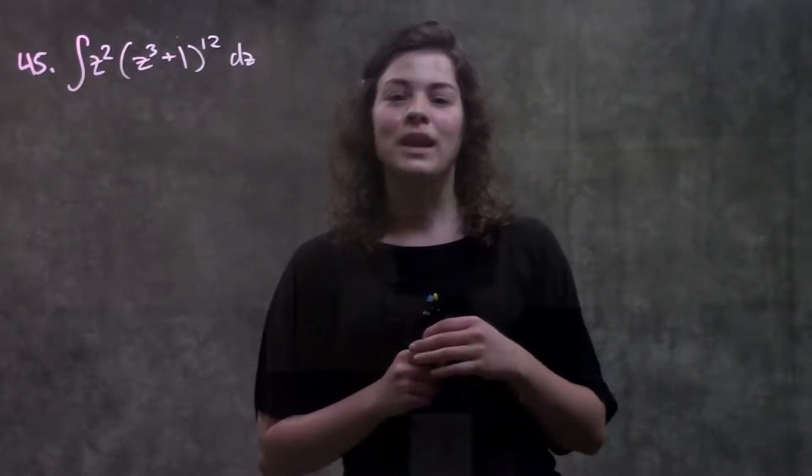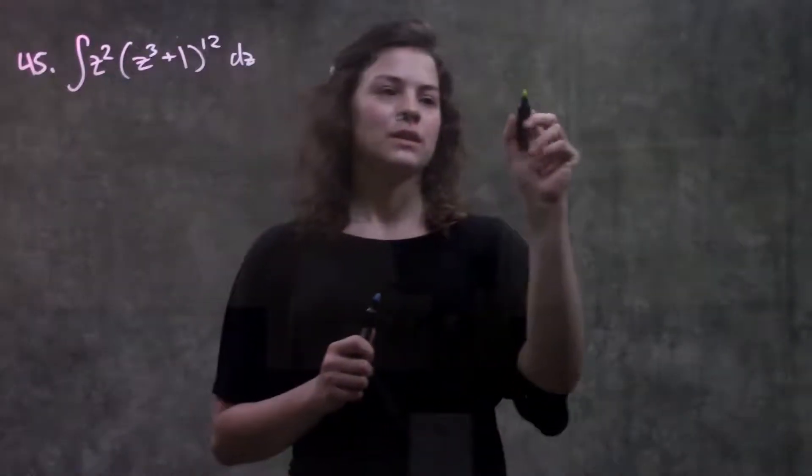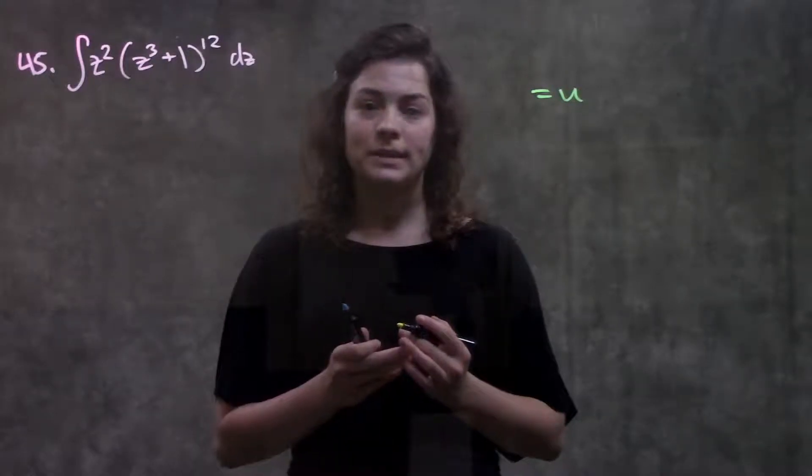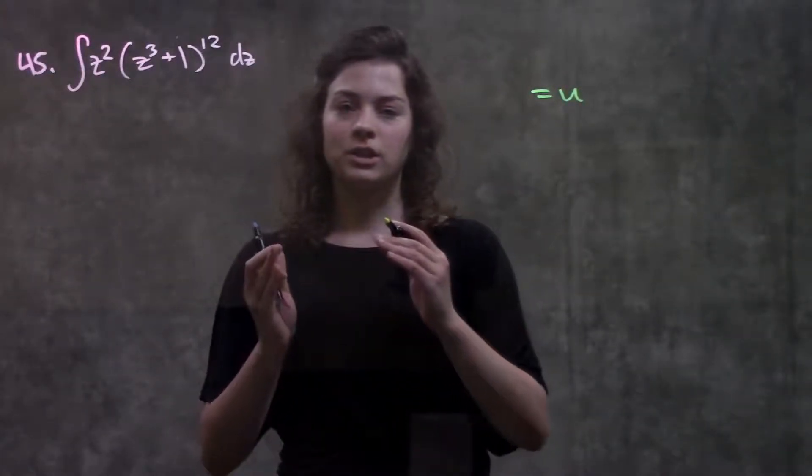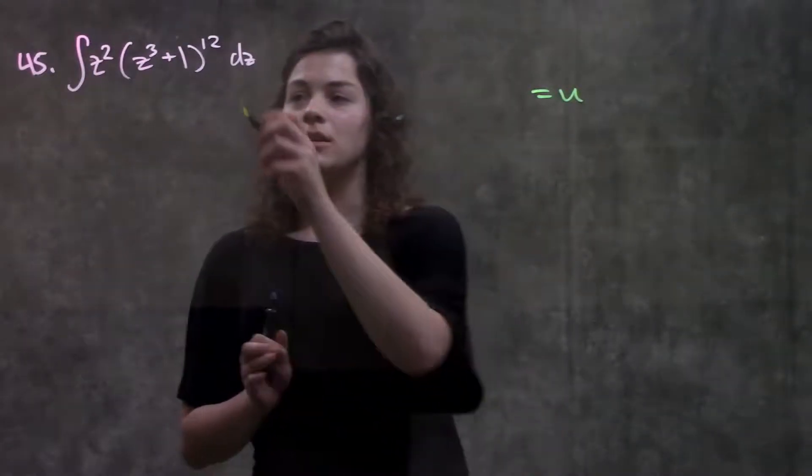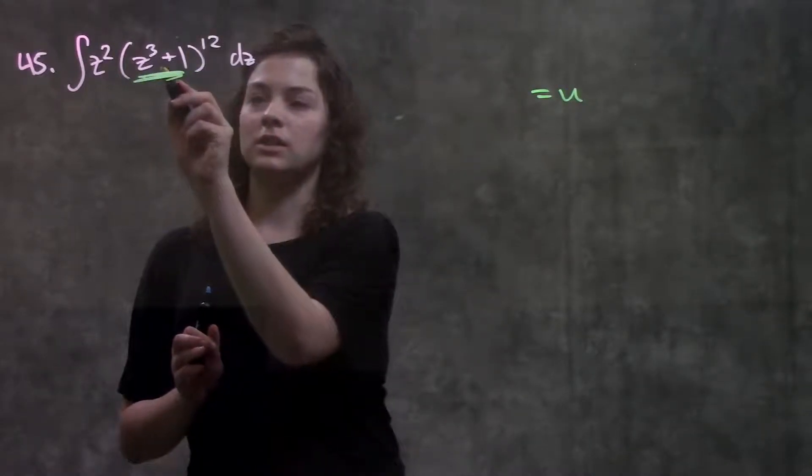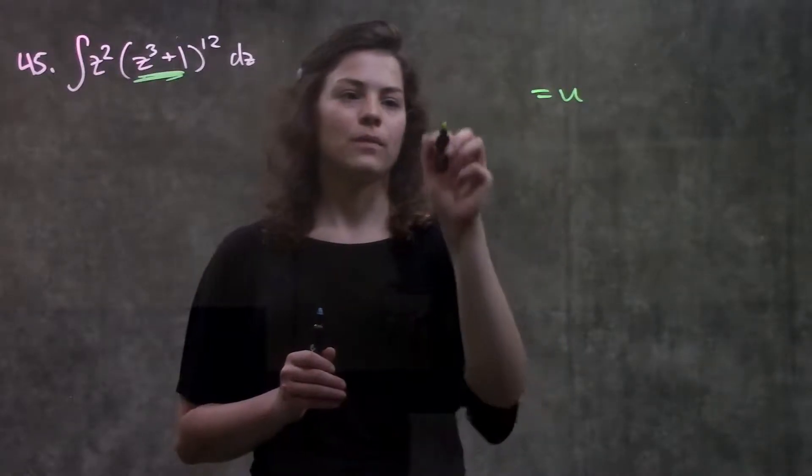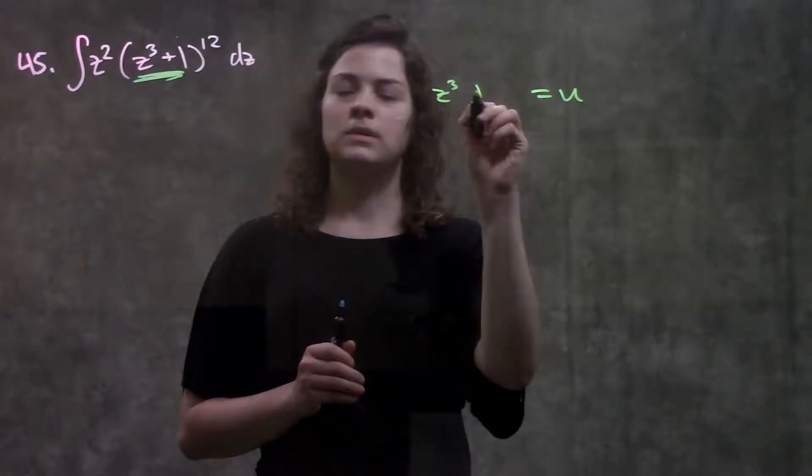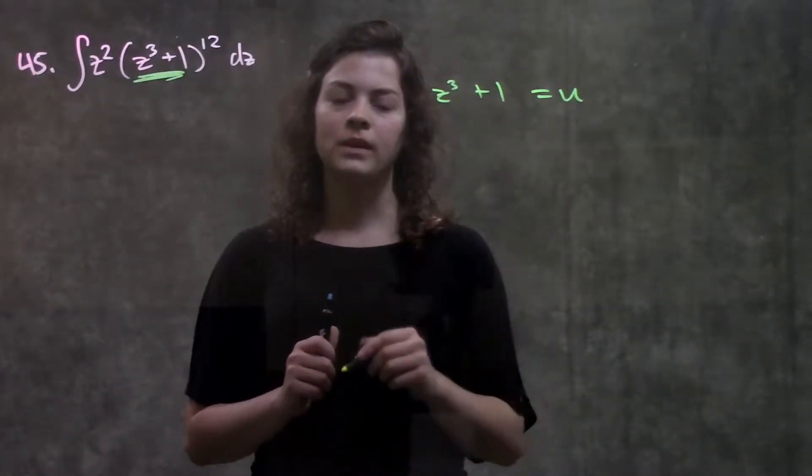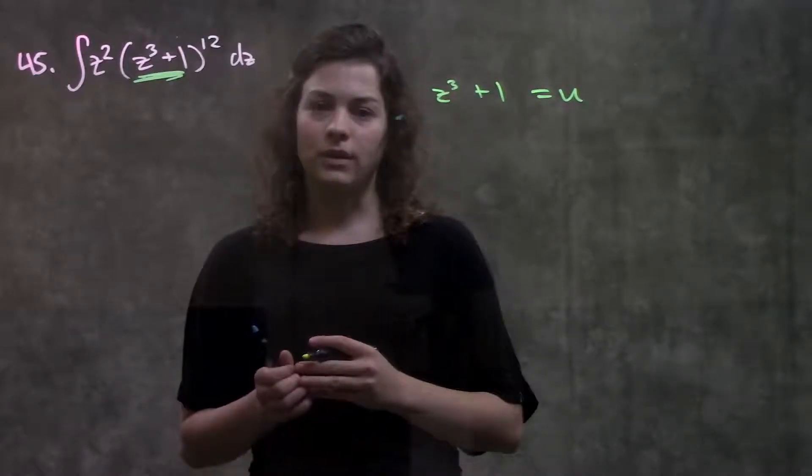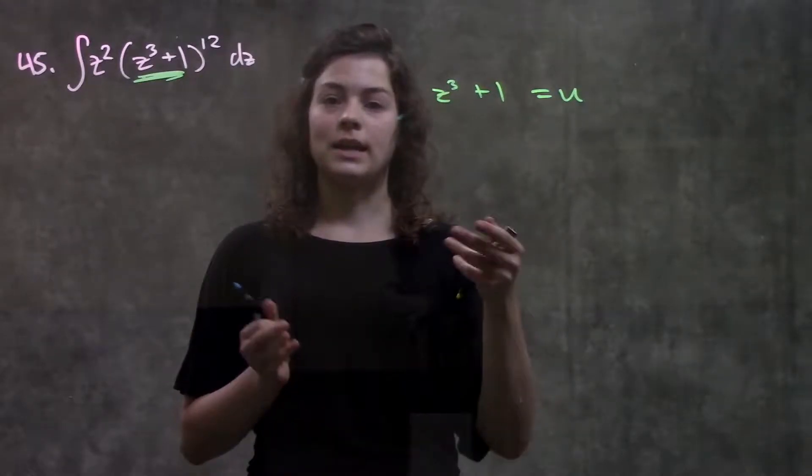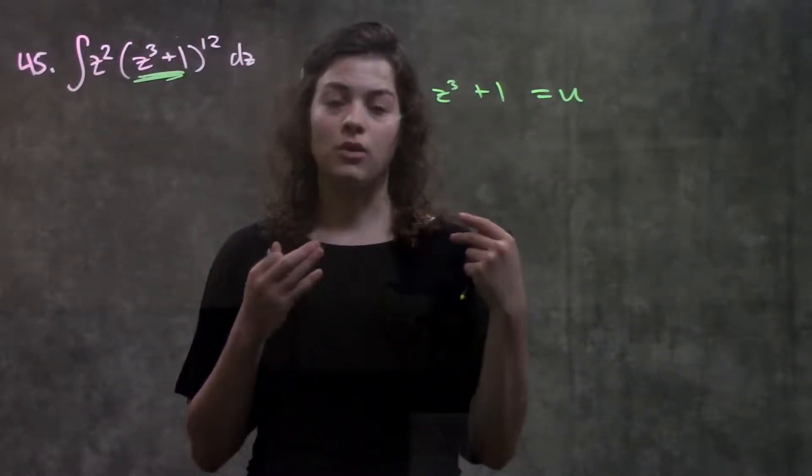So how u-sub works is we're going to take a part of this function and set it equal to u. Generally, the part that you want to set equal to u is going to be some function within another function. So for example, here I have this function raised to a power. I'm going to set this inside part equal to my u. So I have z cubed plus 1 equals u. And next thing I'm going to do is, remember, I'm trying to rewrite this function in terms of u so that I can just take the integral with all the rules that I know how.